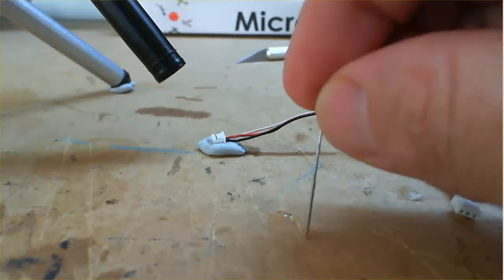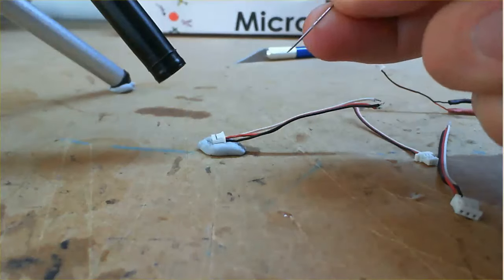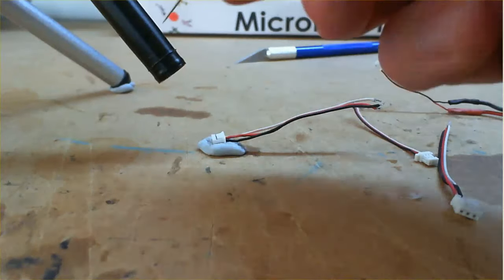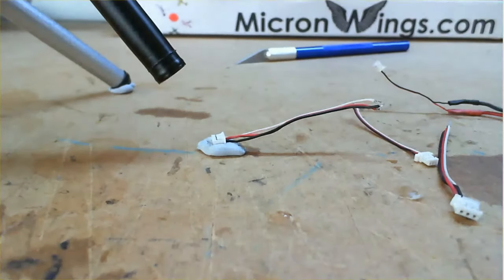Now the idea is just to use a pin and lift the plastic tab up with a pin as you pull the wire out. OK, I'll flip over to the microscope there so we can see.